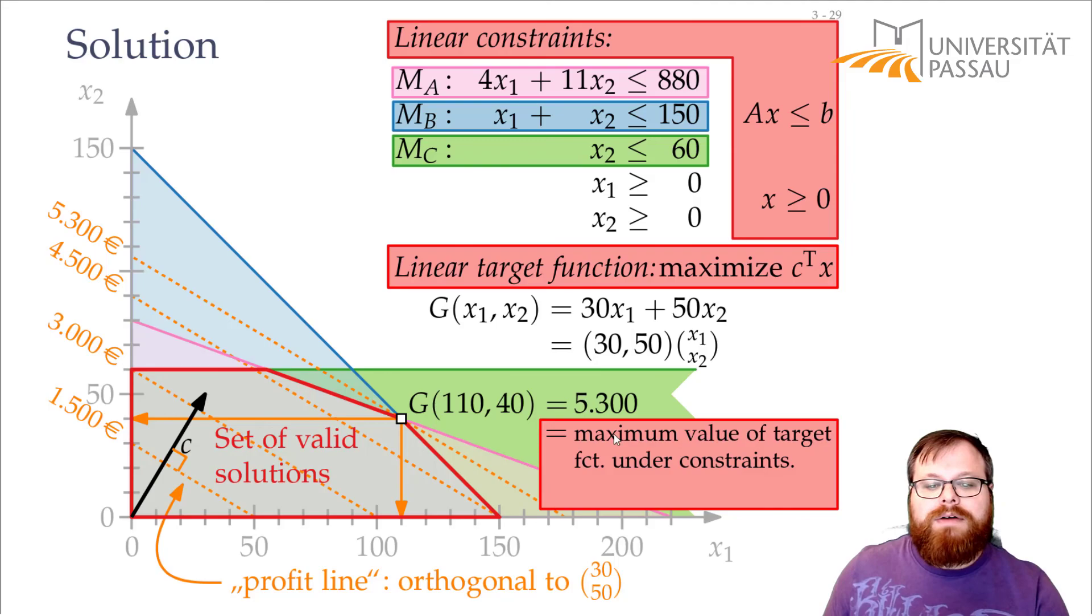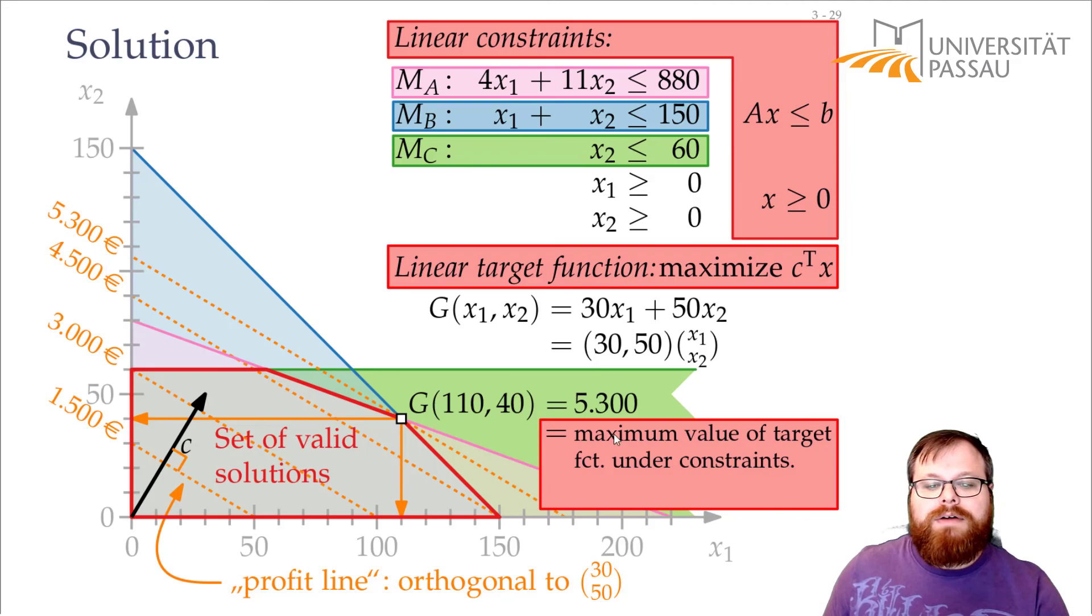And the solution we want to find is the maximum value of the target function under those constraints. So it is the maximum of our vector c times x, under the constraints ax is at most B, and x is at least 0.